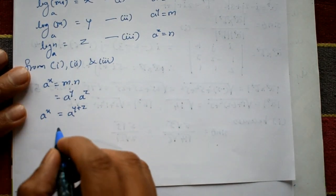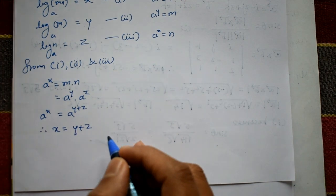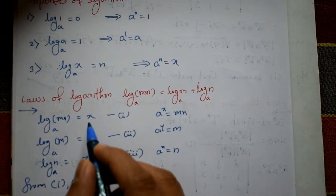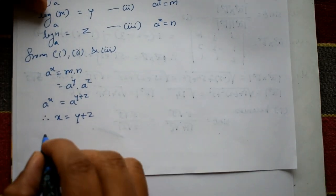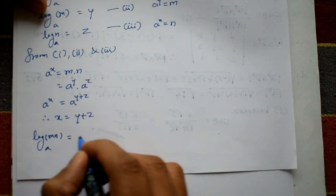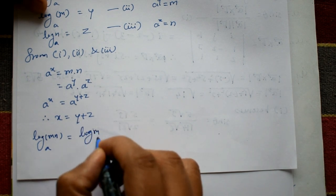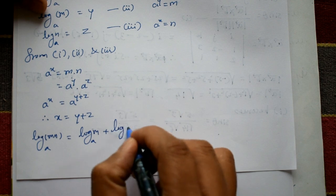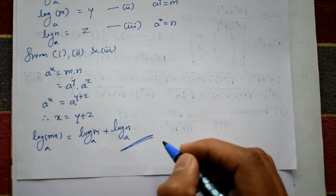Since the base is the same on both sides, therefore x equals y plus z. Substituting back: x is log(mn) to the base a, y is log(m) to the base a, and z is log(n) to the base a. Therefore log(mn) to the base a equals log(m) to the base a plus log(n) to the base a. This completes the proof of the law of logarithms.